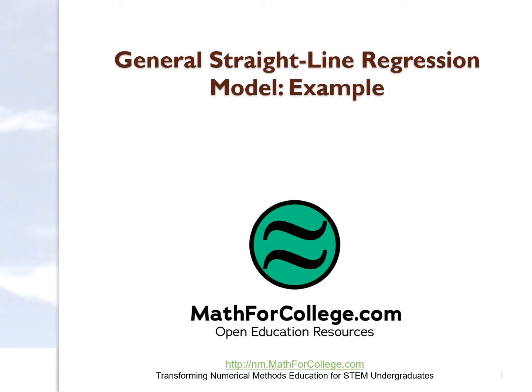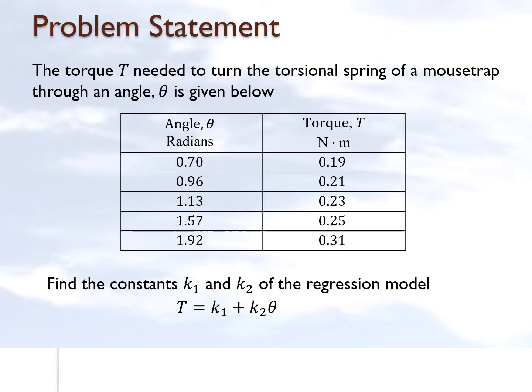In this video, we'll take an example of using the general straight line regression model. So here is the example given to us. We are basically given the torque which is required to open up a torsional spring of a mousetrap through a certain angle.